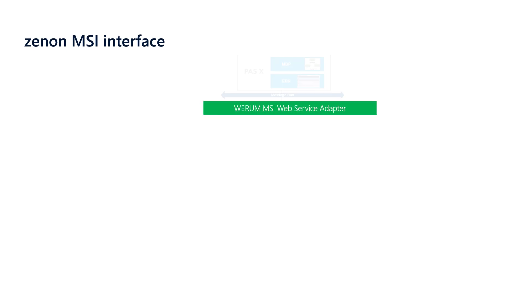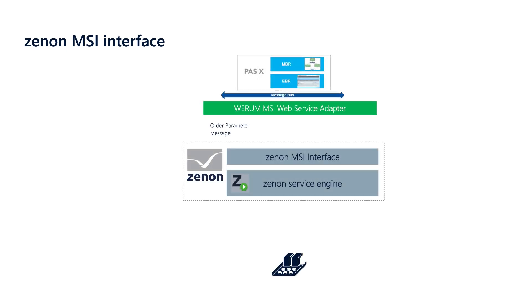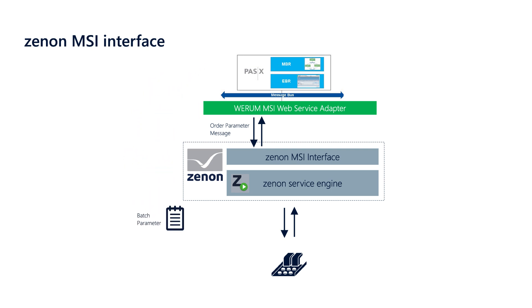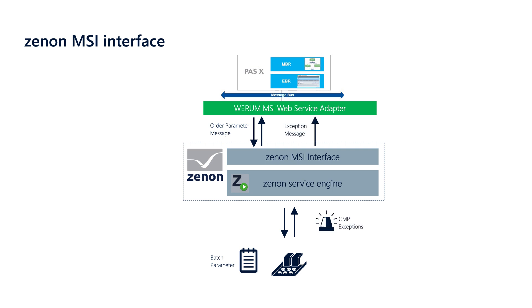PAS-X MSI interface provides direct communication with equipment, connecting the manufacturing execution system with the manufacturing floor. Xenon's MSI interface allows you to send and receive batch information bi-directionally between the PAS-X and your equipment, as well as sending GMP alarm data to the MES.